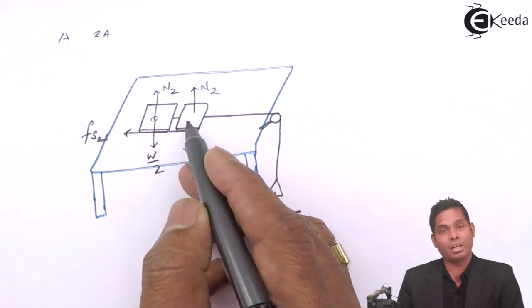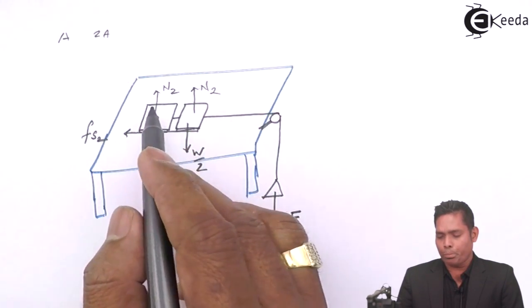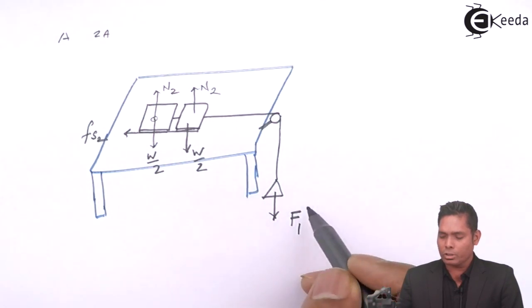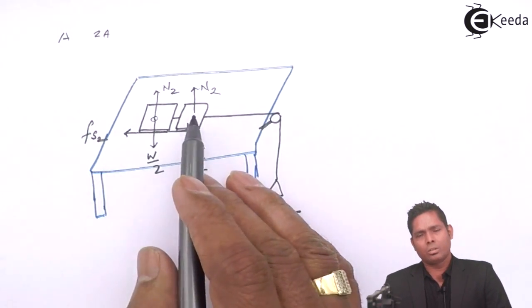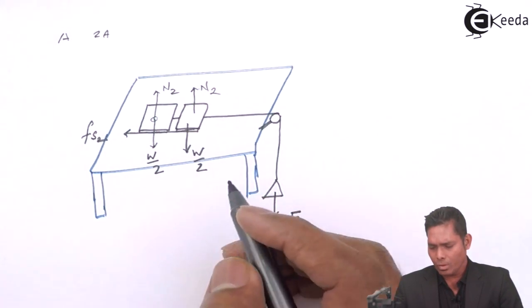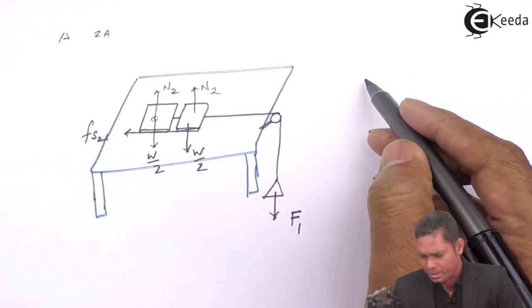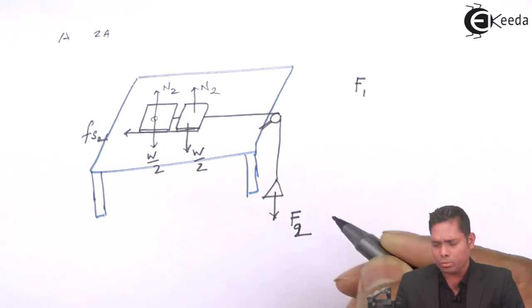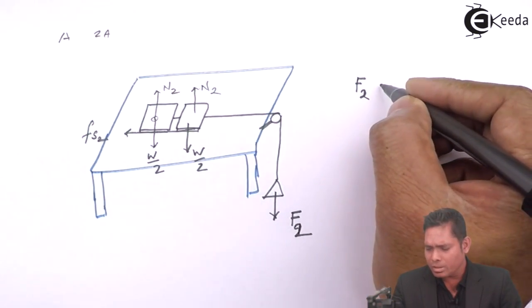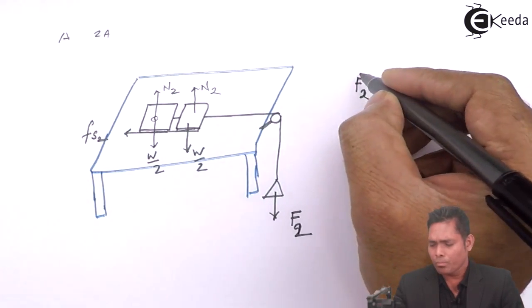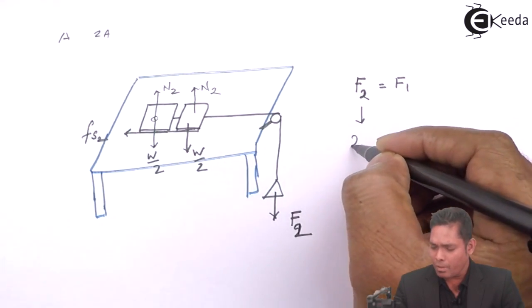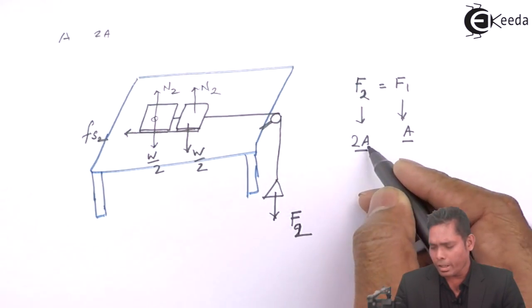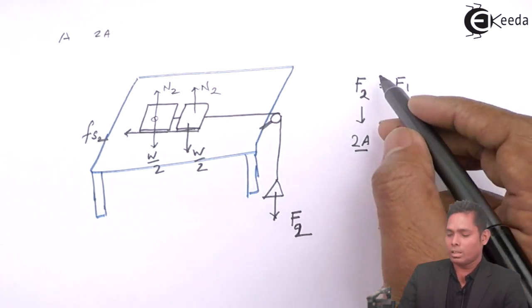They are independent of the area of contact. So, whether you place one over the other, or you increase the area, the force of friction will remain same for the blocks in contact. So, what I am getting is, that the force F1, if I call this as F2 also, then it is found that this F2 is equal to the earlier F1. In case of F2, the area was 2A, in case of F1, the area was A. So, whether the area is increased from A to 2A, but this force will not going to change.